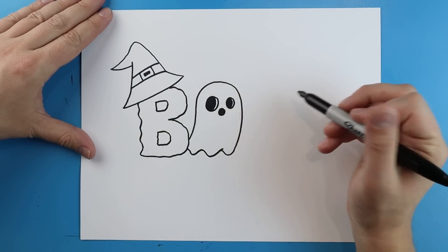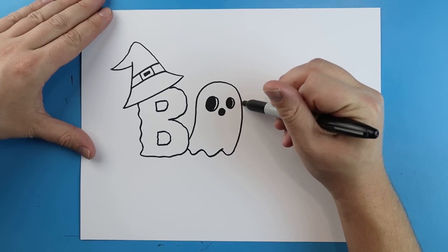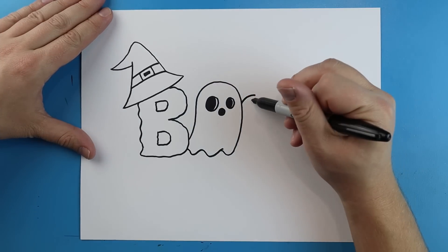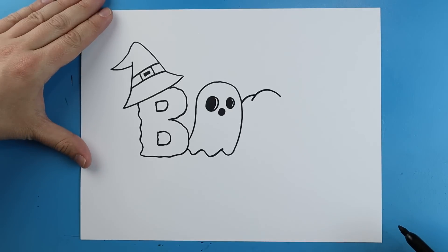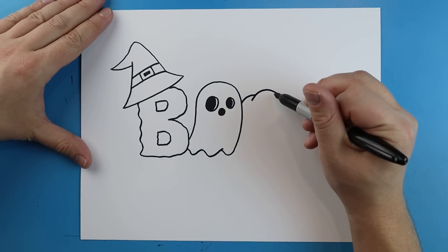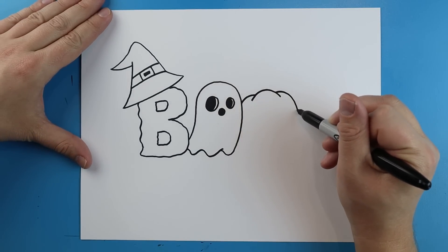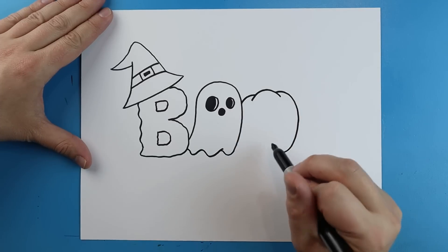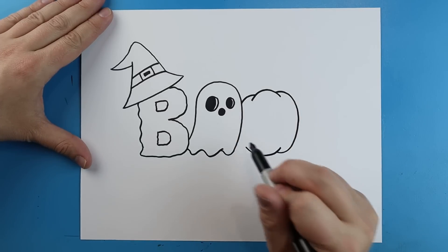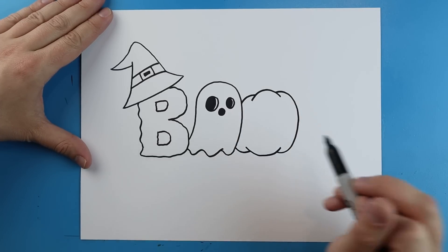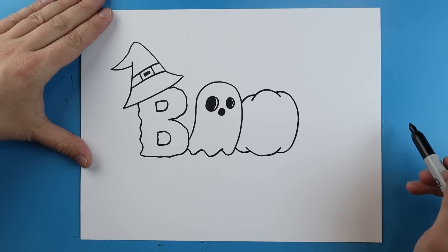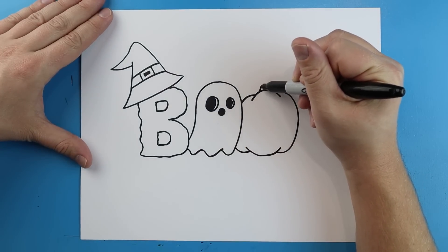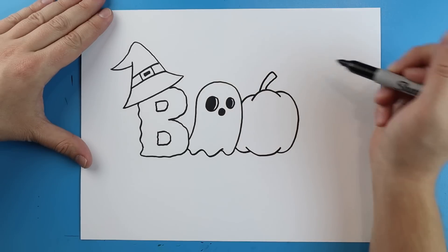Starting over here I want to make a little pumpkin. So I'm going to draw a little line that curves up, make a little line that goes up and down in like a sad face shape, then another little line that comes down and curves over here. We'll make another line that curves up and one more that goes down and up. Then right here I'm going to make a line that goes up, down, and then back down.